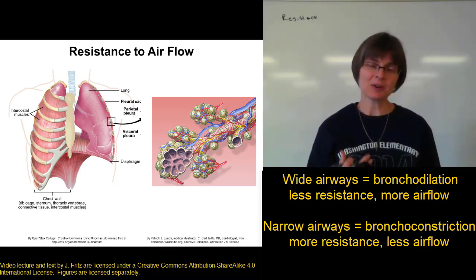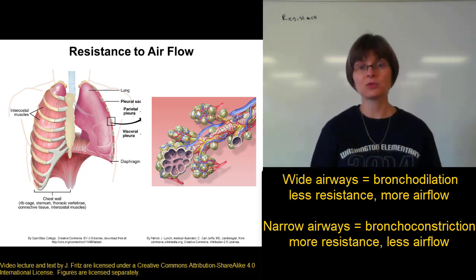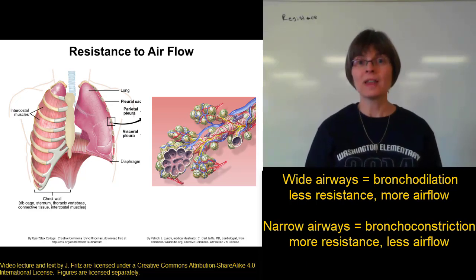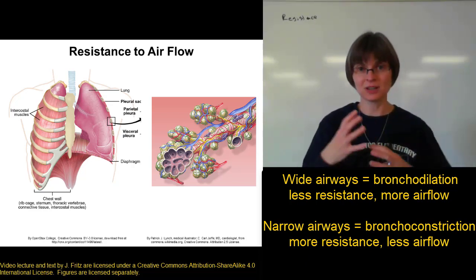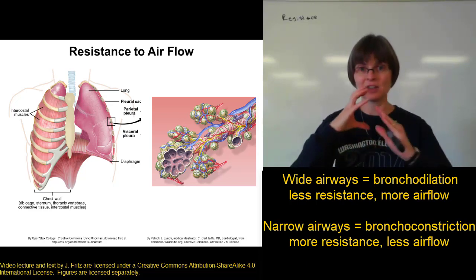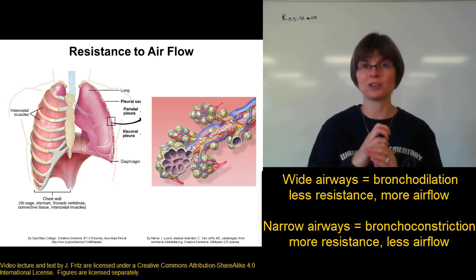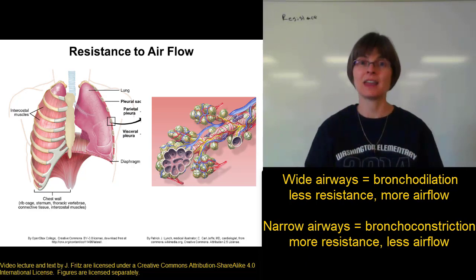The diameter of your bronchi and bronchioles is controlled by a layer of smooth muscle around those air passages. When that smooth muscle contracts, the opening of the airway gets narrower — this is called bronchoconstriction. When that smooth muscle relaxes, the airways get wider — that's called bronchodilation.